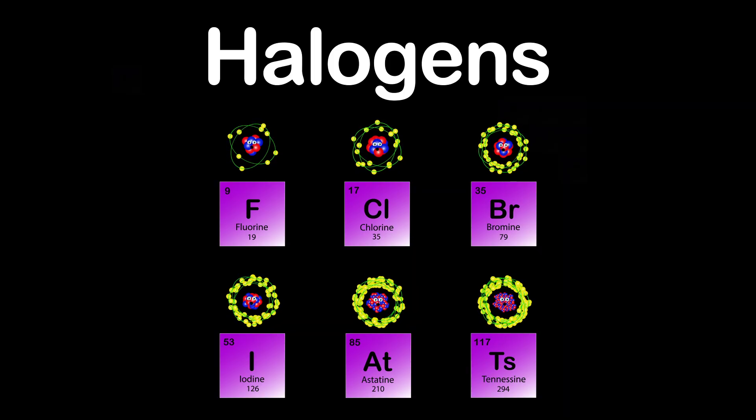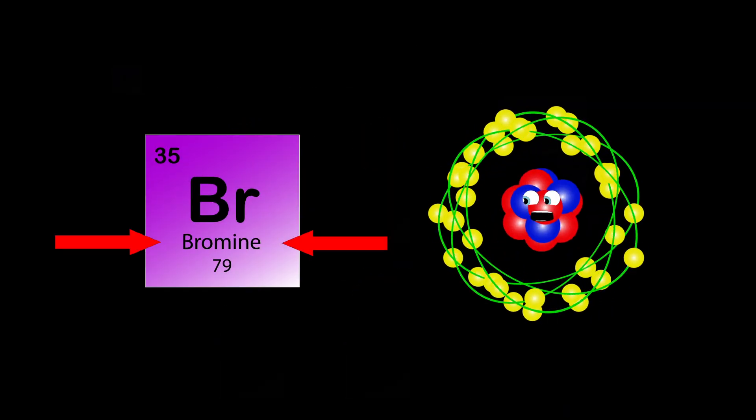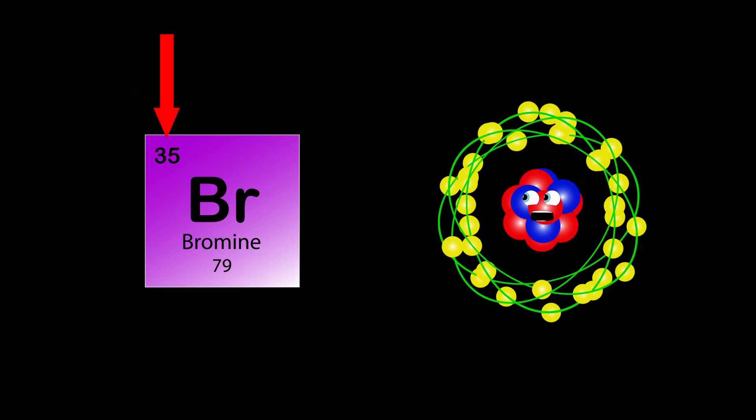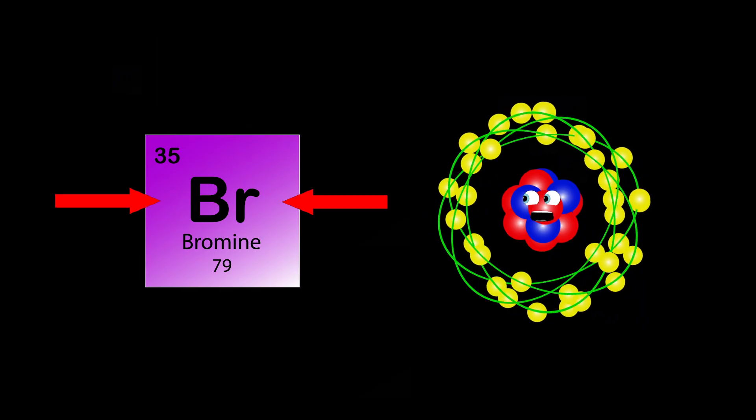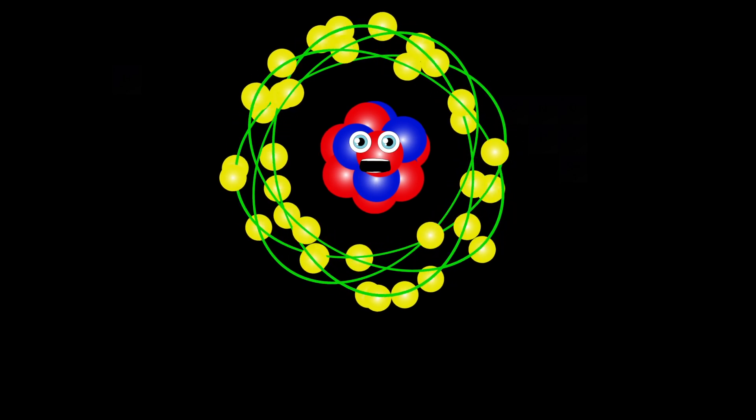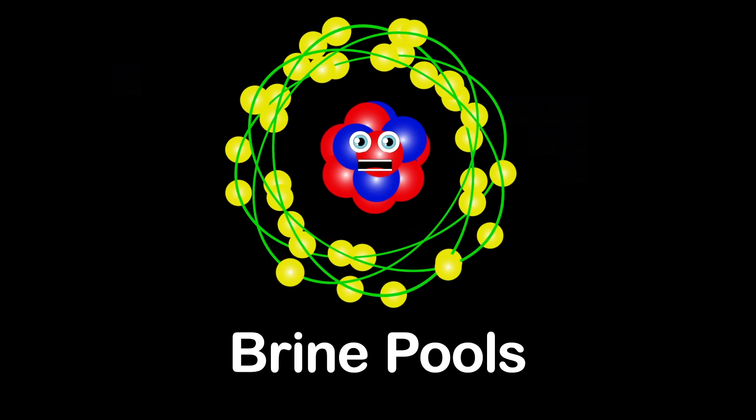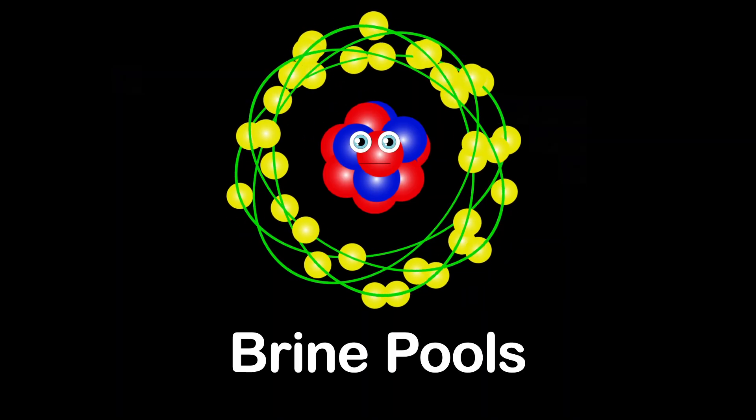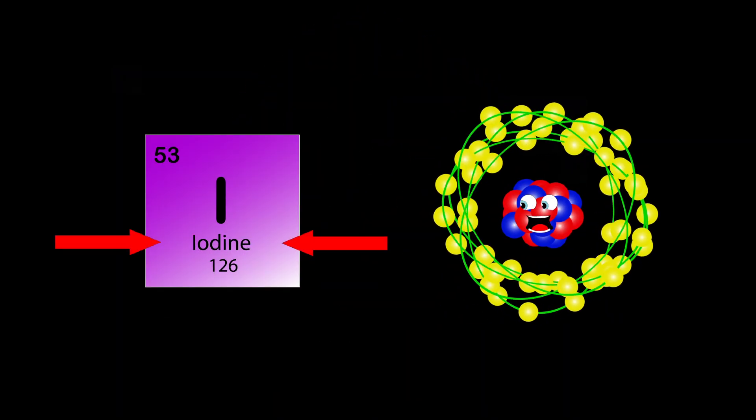I'm Bromine, my atomic number is 35, my atomic mass is 79. Br is my symbol, into knowledge we dive. I'm very reactive and don't occur free in nature. Commercially I'm extracted easily from brine pools.